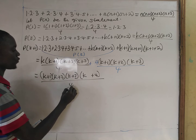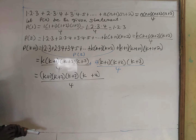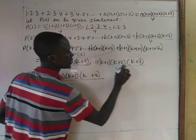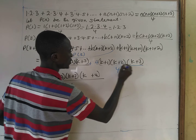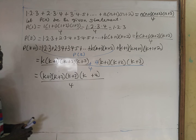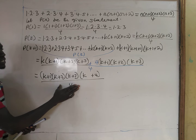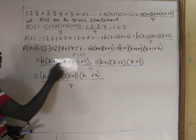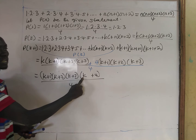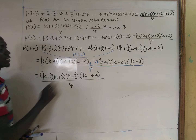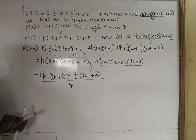All divided by 4. We have 4 in the denominator for both parts, so we combine them under one 4. When we factor out (k+1)(k+2)(k+3), the first part leaves k and the second part leaves 4, giving us (k+4)(k+1)(k+2)(k+3) divided by 4, which we can write as (k+1)(k+2)(k+3)(k+4) all divided by 4.